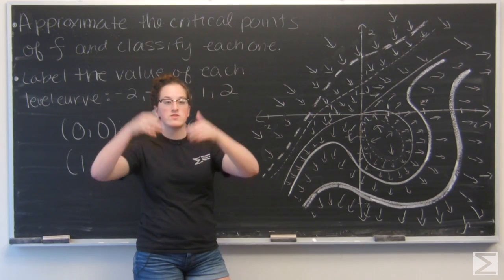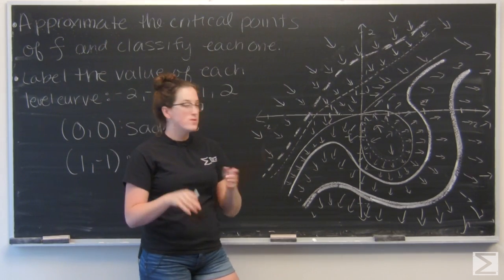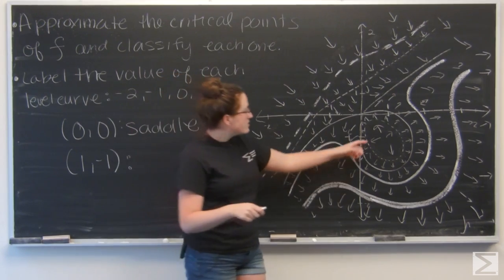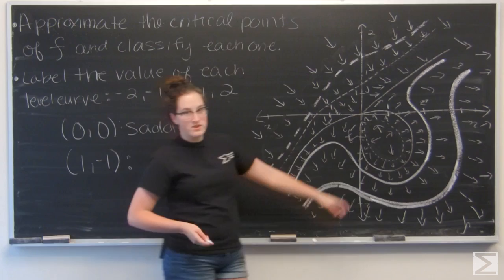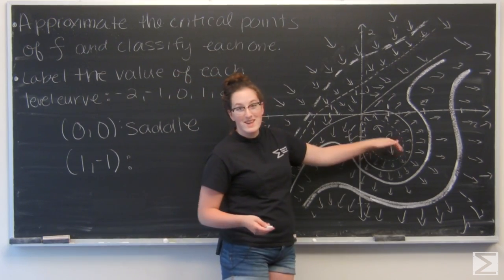So if I'm looking at a max, the gradient vectors will point in towards the center. And then if it's a minimum, they'll point out. And here, they do all point out. So it's increasing away from that center, making (1, -1) a local minimum.